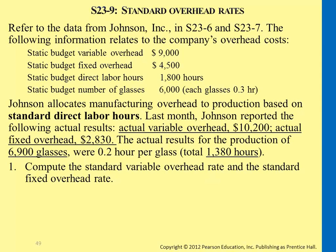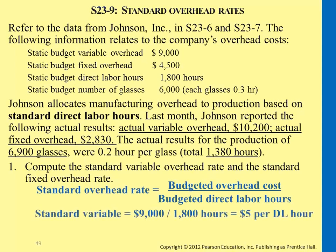Before calculating variances, we will first need to know the variable overhead rate and the fixed overhead rate, so we have a base to compare against. The budgeted variable overhead total cost is $9,000. We budgeted this, and the basis direct labor hours we expect to have is 1,800 hours. So the variable overhead rate would be $5 — that would be the budgeted overhead rate for variable cost.